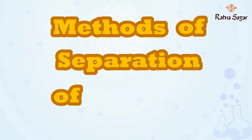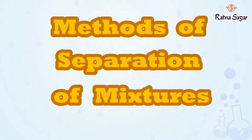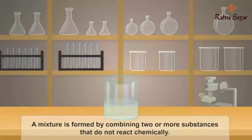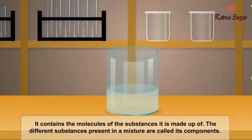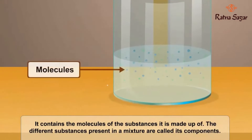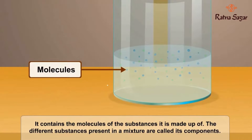Methods of Separation of Mixtures. A mixture is formed by combining two or more substances that do not react chemically. It contains the molecules of the substances it is made up of. The different substances present in a mixture are called its components.